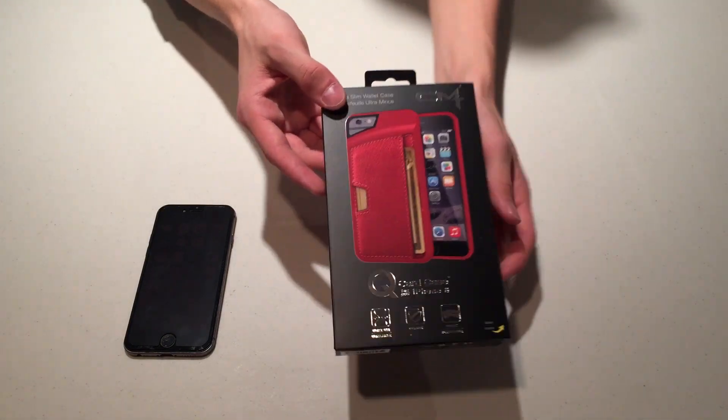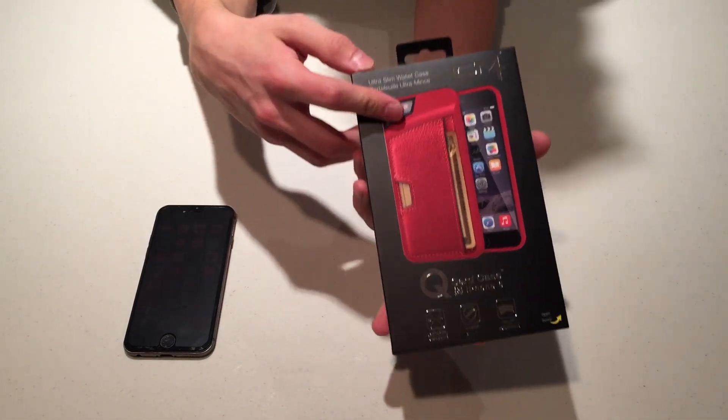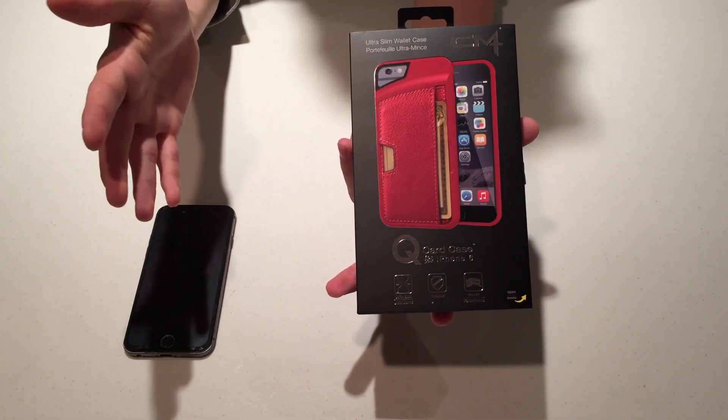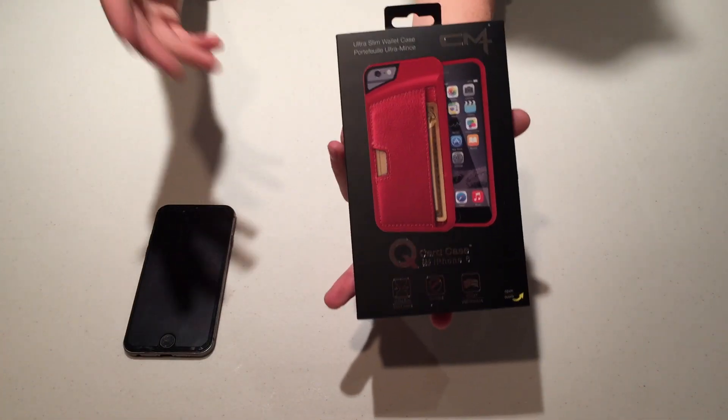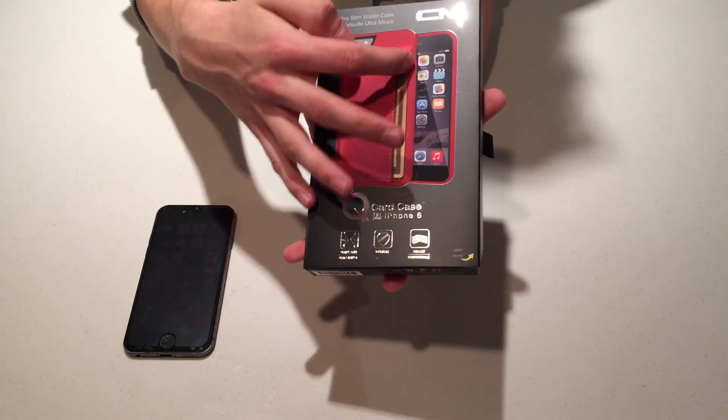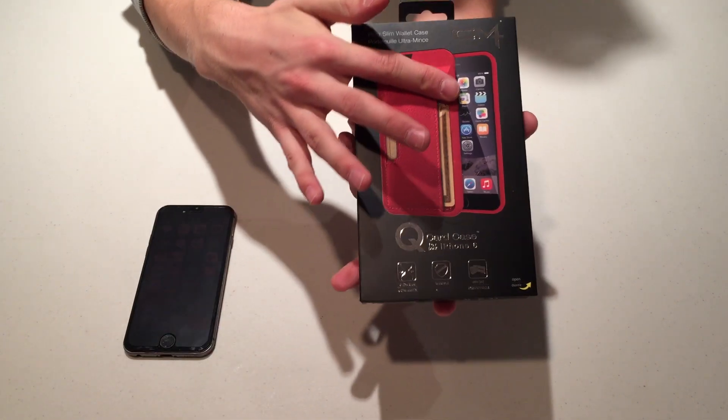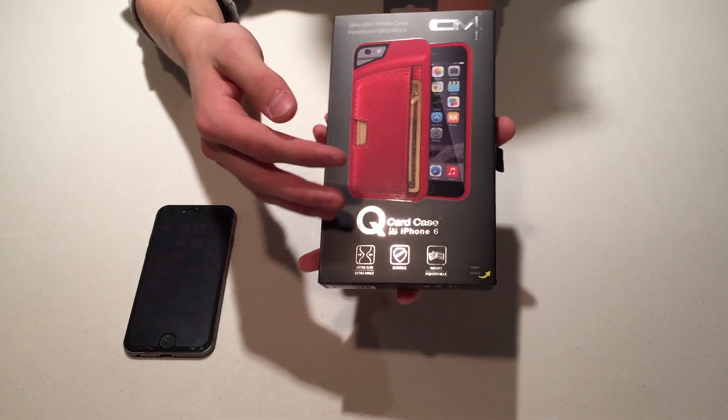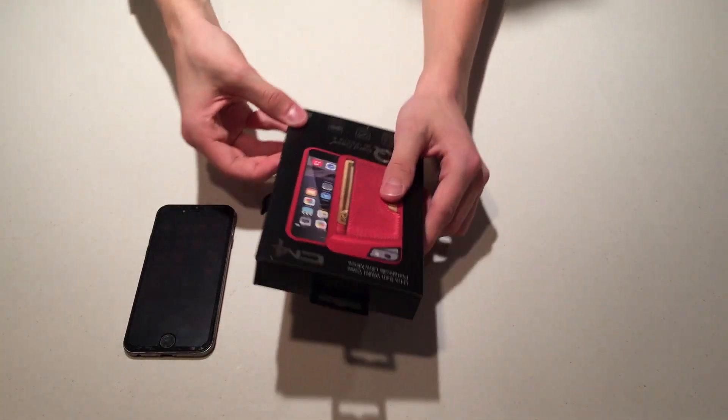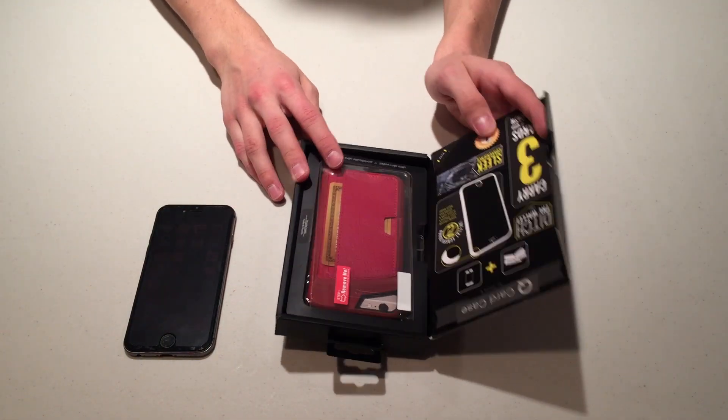So as you guys can see, this is the Q-Card, as I mentioned, from CM4 for iPhone 6. So the Q-Card case for iPhone 6 by CM4 utilizes your desire to simplify life and protect your iPhone. It does include here, we do have an opening for any credit cards that you guys may have, and it is a leather-backed design. Really, really nice. So let's go ahead and open this up, guys, and then I'll get into more detail on the actual case itself.